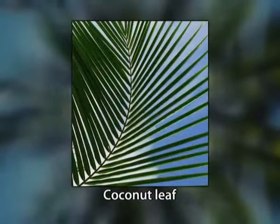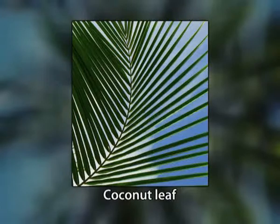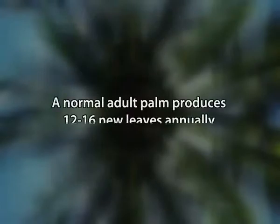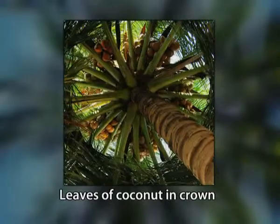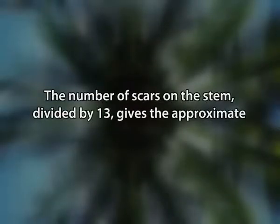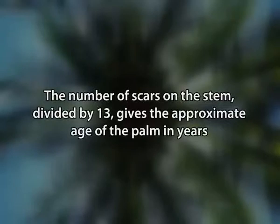Third, the leaf. The first leaves of a coconut seedling have the pinnae fused together and appear as entire leaves. After eight to ten pinnae have been formed, subsequent leaves tend to split into leaflets. Generally, a normal adult palm produces twelve to sixteen leaves annually, each bearing a corresponding flower cluster, i.e., inflorescence. There are about thirty to forty leaves in a healthy crown. The age of an adult palm is correlated with the number of leaf scars on the stem, divided by thirteen, which gives the approximate age of the palm in years.